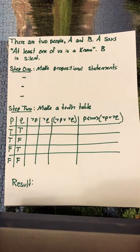Suppose we're given the following. There are two people A and B. A says at least one of us is a knave. B is silent.